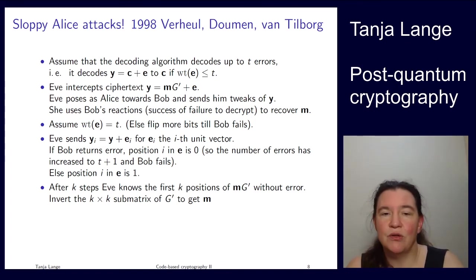So Bob says, hmm, couldn't decode. That means it flipped from 0 to 1. Bob remains quiet. Aha, it flipped from 1 to 0. So she does this for the first, second, third, till the kth position. And well, she only needs k positions because that's the length of m. And so she has just figured out what the first m positions of e were. And so that means she actually gets to clear the part of e on the first positions. And she just inverts this first sub-matrix of g'. Okay, you should stop me now, well, you can't because I'm online. So I'm stopping myself here now. Okay, I'm glancing over some technical difficulties here. I'm assuming that this part is invertible.